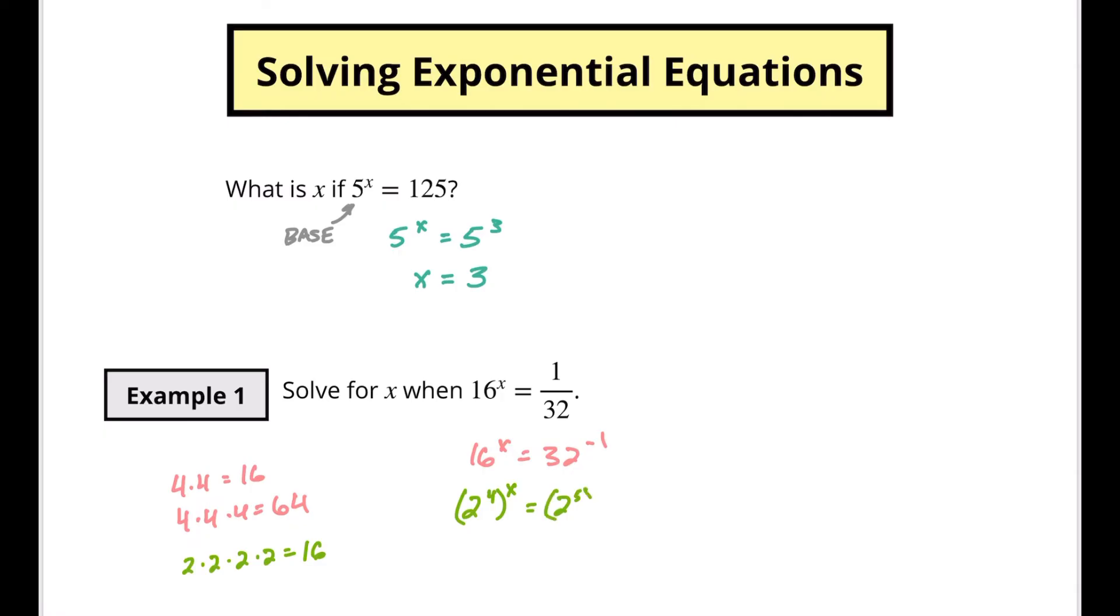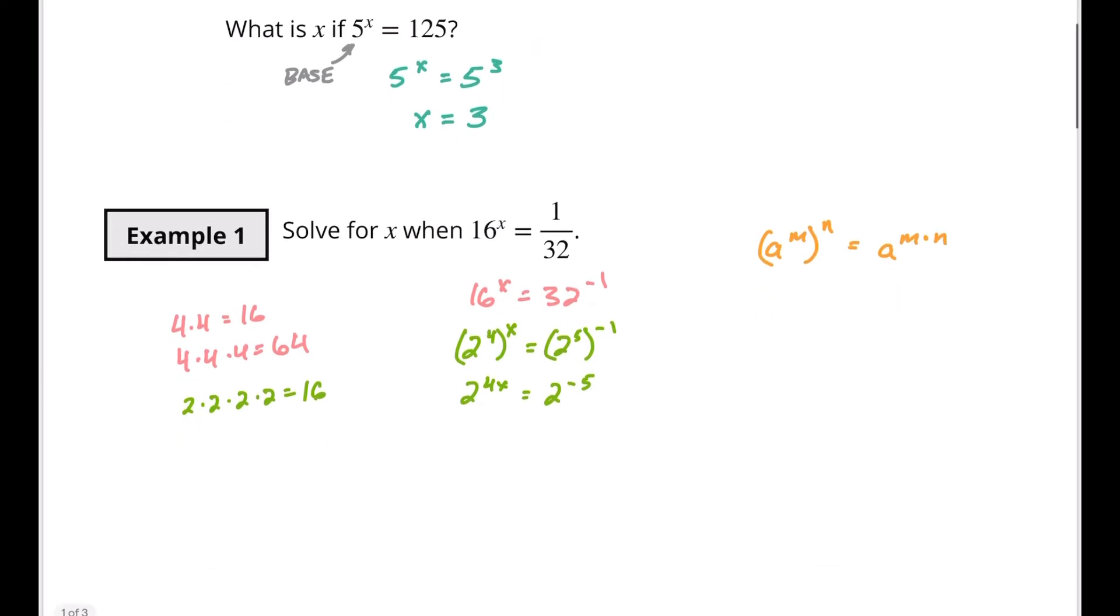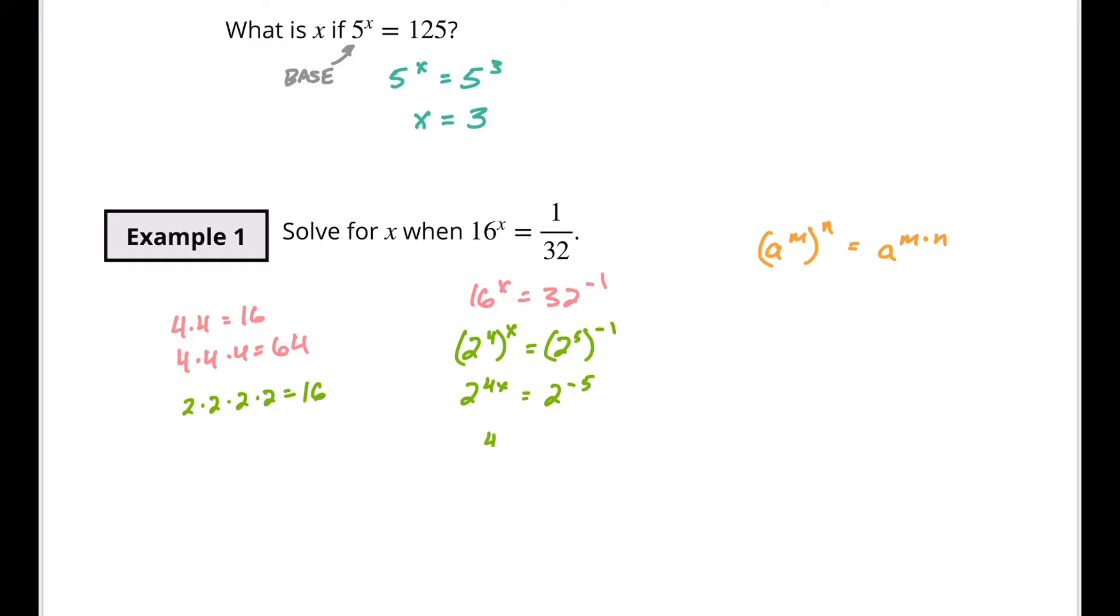So I'm going to rewrite 32 as 2 to the 5th power to the negative 1. And now I'm going to use my power of a power rule where we said if you've got a to the m power and that is to the nth power, then that rule says that we have a to the m times n power. So I can use this property right here and I can look at this and say I've got 2 to the 4x power is equal to 2 to the negative 5th power. Now, let's give ourselves a little space so we can drop the base and we're going to have 4x equals negative 5. And then when I solve for x, I know that it's going to be negative 5 over 4. So that is this equation solved for x.